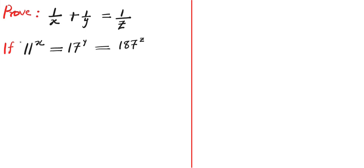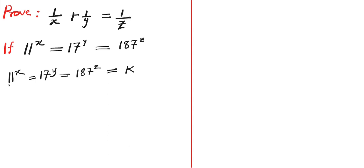Hello viewers, welcome to my YouTube channel. In this video we are going to prove that 1 over x plus 1 over y equals to 1 over c, given that 11 power x equals to 17 power y equals to 187 power c. So without wasting much time, let's get into this. In order to solve this, we need to equate this to a constant, so let's have 11 power x equals to 17 power y equals to 187 power c equated to a constant k.